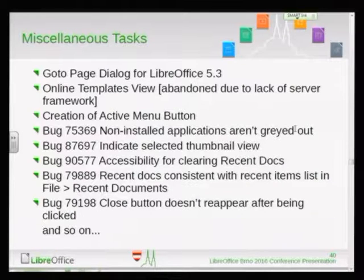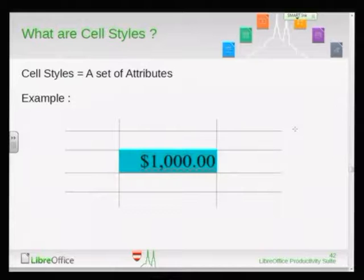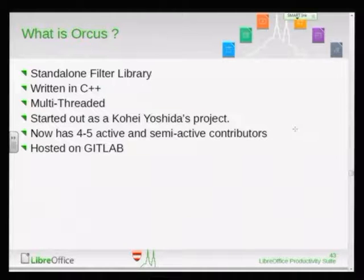Good afternoon. My name is Jaskaran, IRC nick JBSG, and I was mentored by Marcus Morehart for the project: import cell styles into Calc using Orcus. Two things: cell styles and Orcus. A cell style is a set of attributes — like a blue background with a wavy underline and number format. The second thing is Orcus — a standalone filter library written in C++, multi-threaded. It started as a fun project of Kohai Yoshida, now has around four or five active contributors and is hosted on GitLab. It provides import filters like ODS, OpenOffice XML, XLS, PlainText, Generic XML, Gnumeric XML, and parsers like CSV, YAML, XML, JSON, CSS.